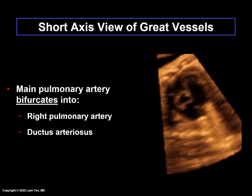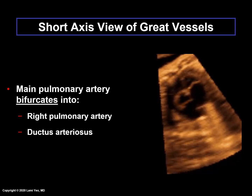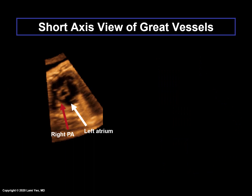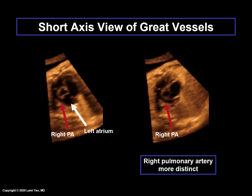In the short-axis view of the great vessels, the left atrium, right atrium, tricuspid valve, right ventricle, and main pulmonary artery can be identified. The main pulmonary artery, which bifurcates into the right pulmonary artery and ductus arteriosus, wraps around the cross section of the aorta at the level of the aortic valve. The right pulmonary artery courses under the aorta and to the right. Here is the same image with the right pulmonary artery indicated by the red arrow and the left atrium by the white arrow.